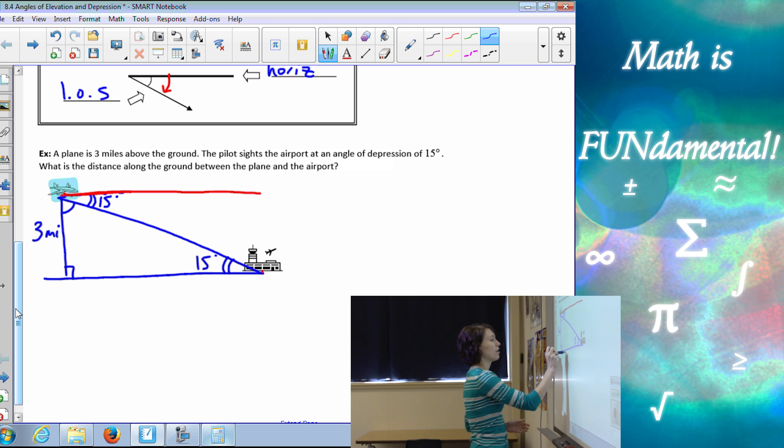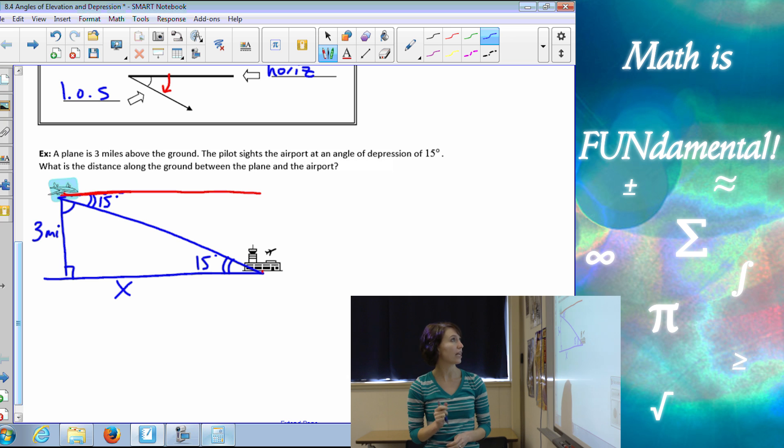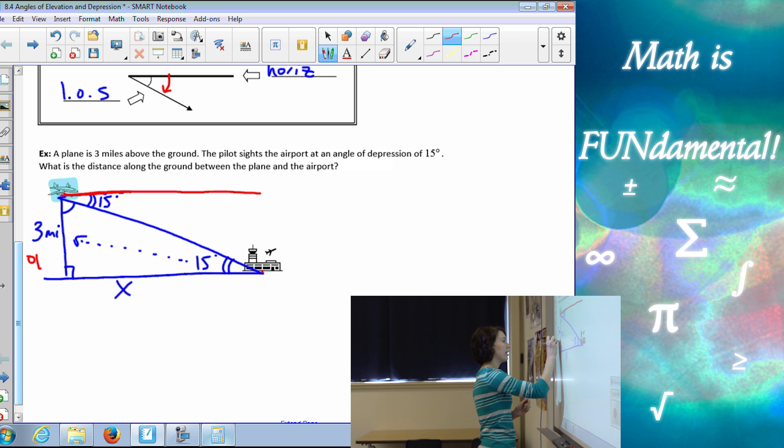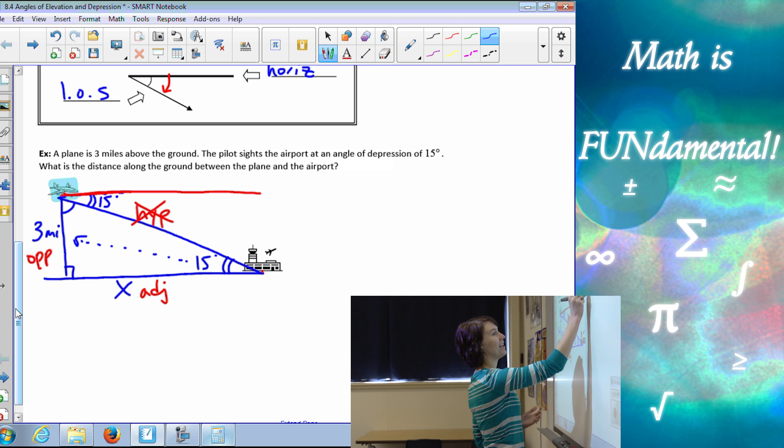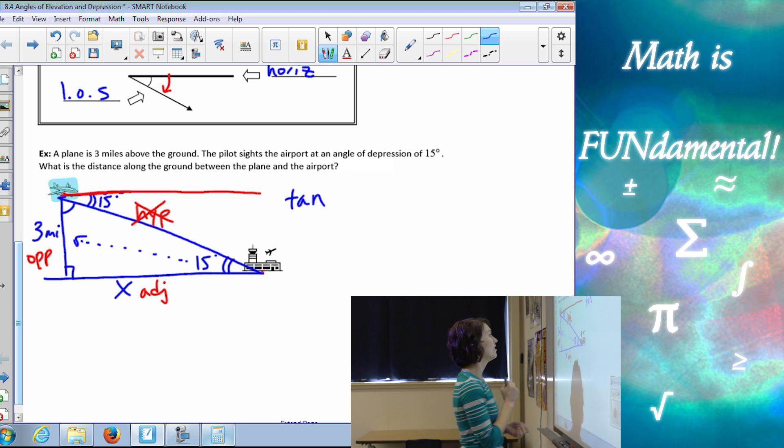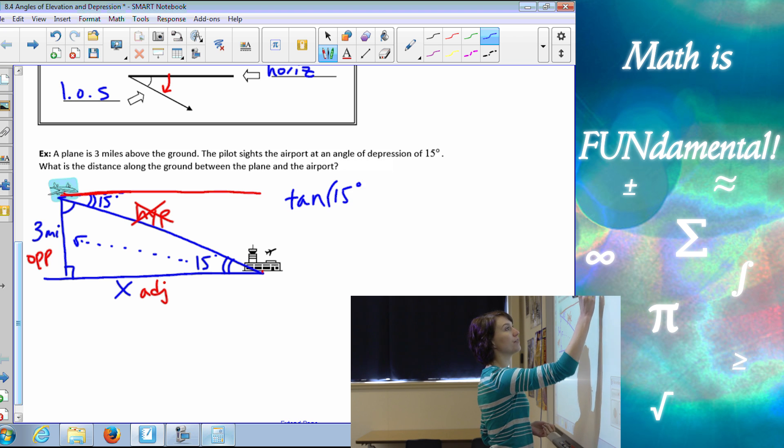Alright, so now it says, what is the distance along the ground between the plane and the airport? So again, we want to use our sine, cosine, or tangent. So across from our angle is always our opposite. Here is my hypotenuse, and here's my adjacent. If you notice, again, we're not using hypotenuse, it just happens to be tangent again, not always the same, but in these two examples they are. So our tangent of our angle, 15 degrees, equals opposite 3 over adjacent, which is x.